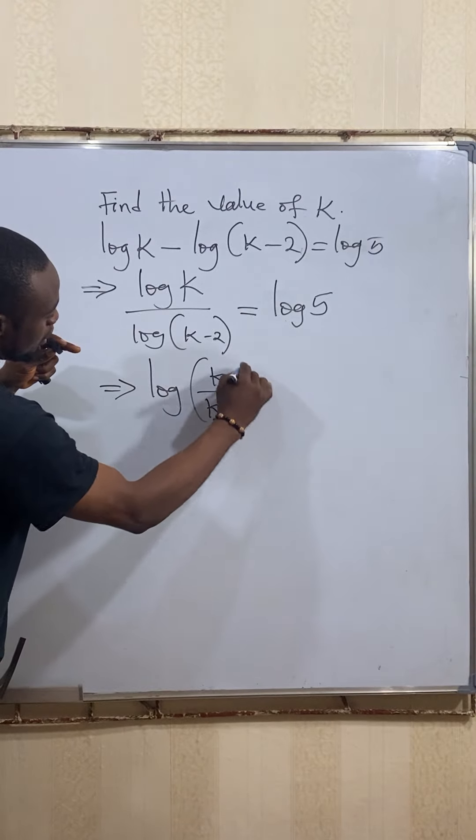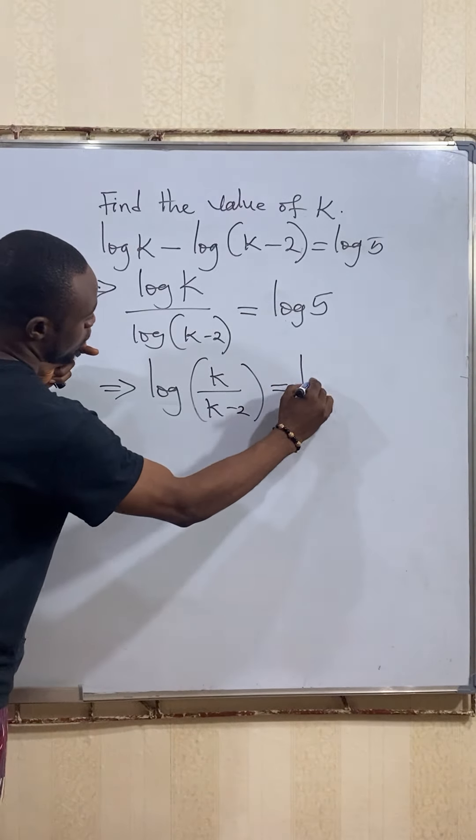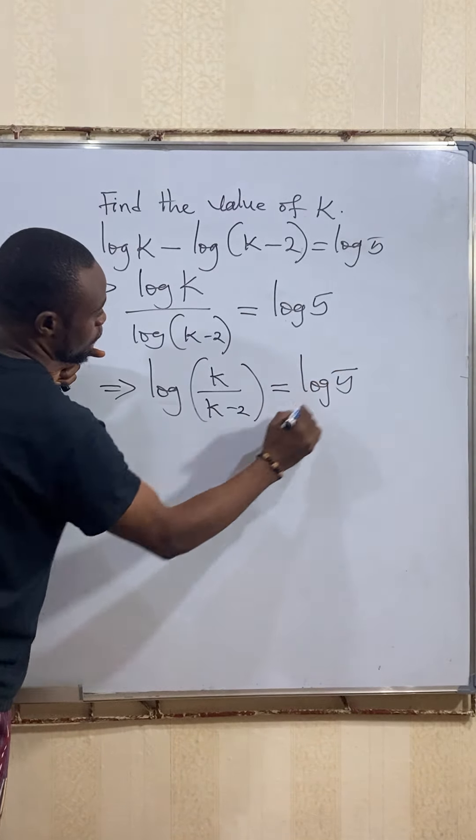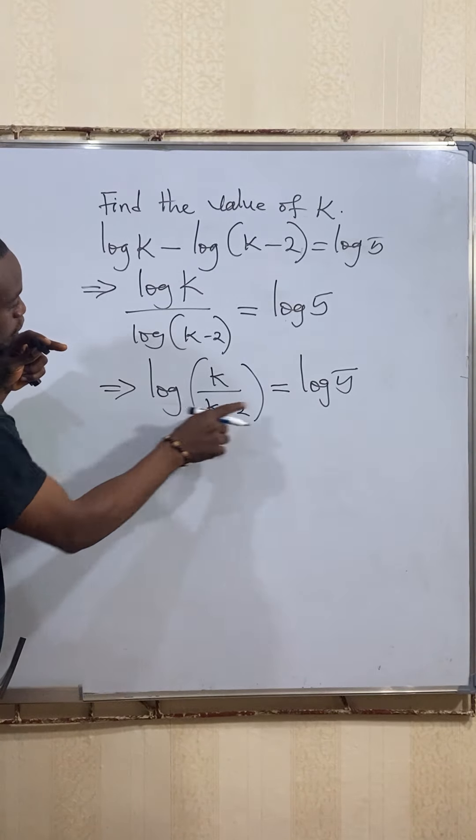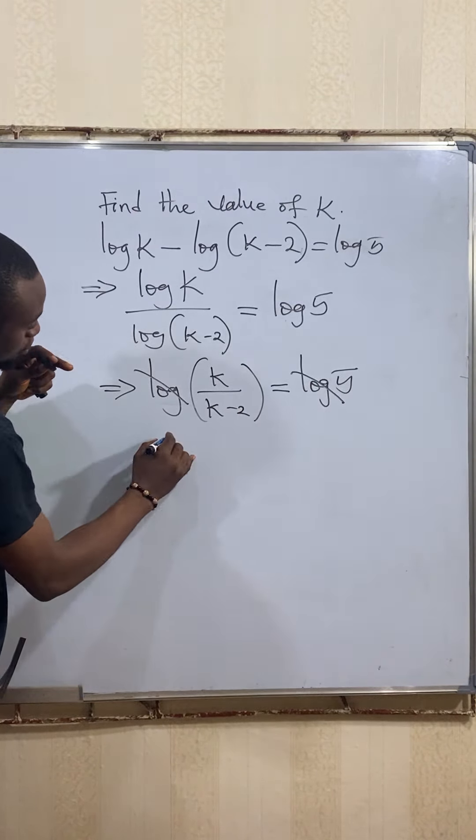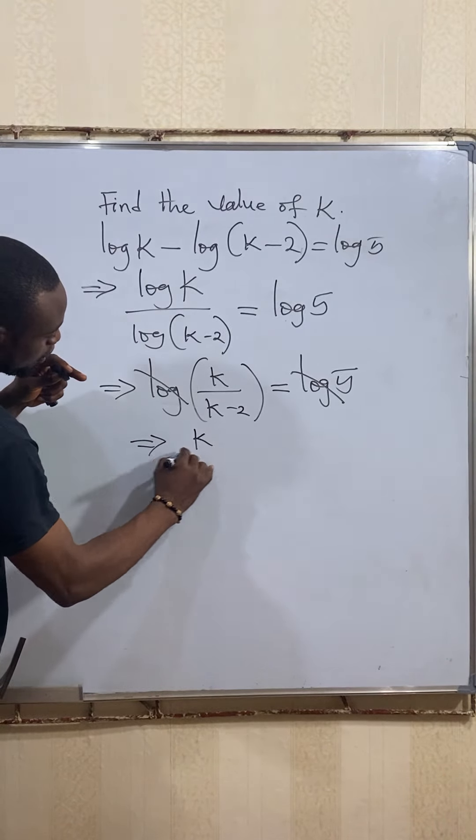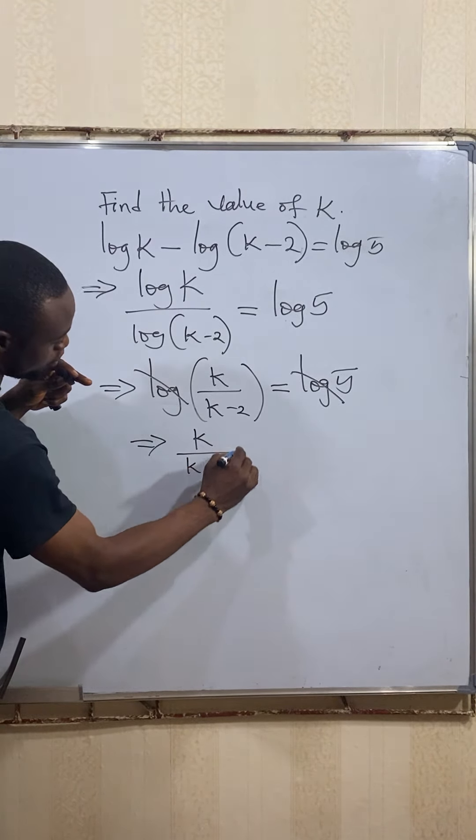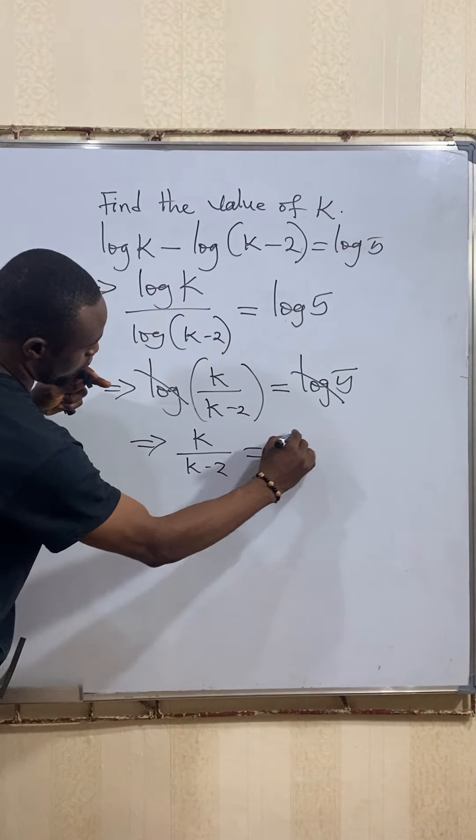Since we have log here and log at the right hand side, we can cancel out this log and cancel out the log. So we now are left with k over k minus 2 to be equal to 5 over 1.